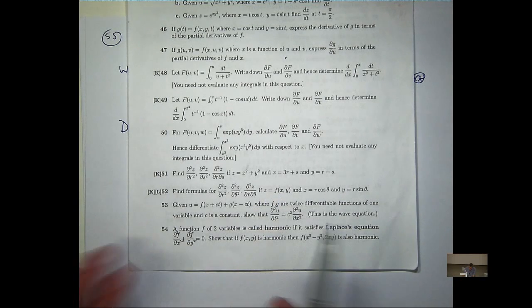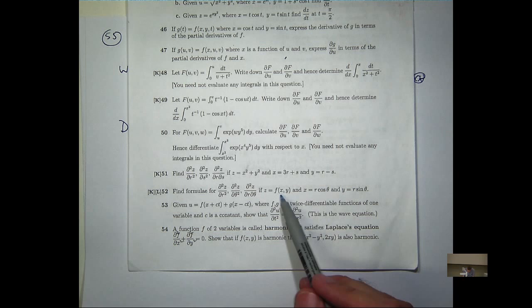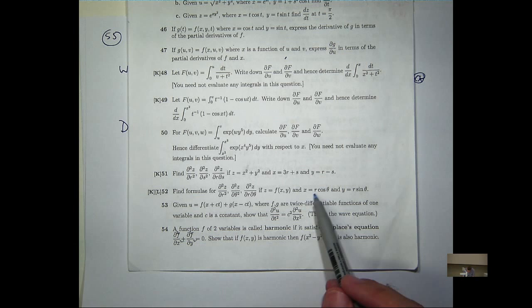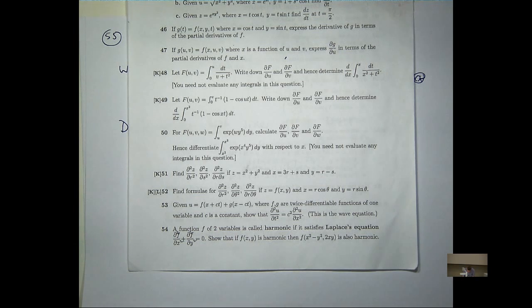We've got a function of two variables, f. We don't know what it is. All we know is that x and y have some sort of dependence on these two variables, r and theta, in a polar coordinate kind of fashion.